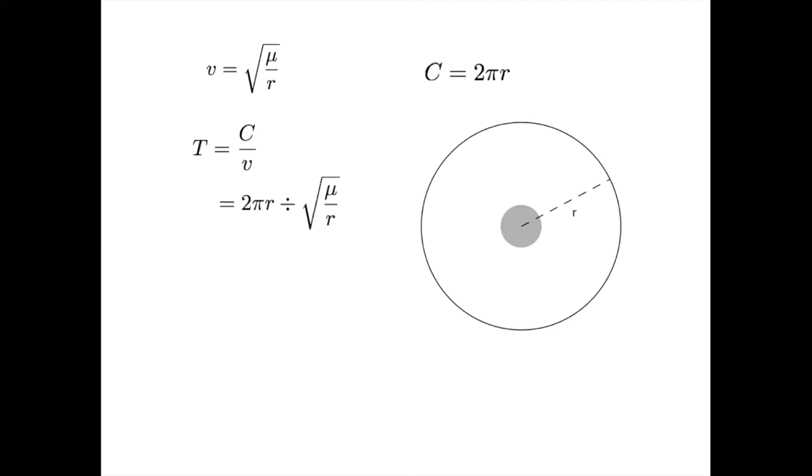We'll simplify by multiplying by the reciprocal of the fraction. We can combine the r's together by just recognizing that r is equivalent to the square root of r squared. Now we can collect all this under a single square root, getting this formula.